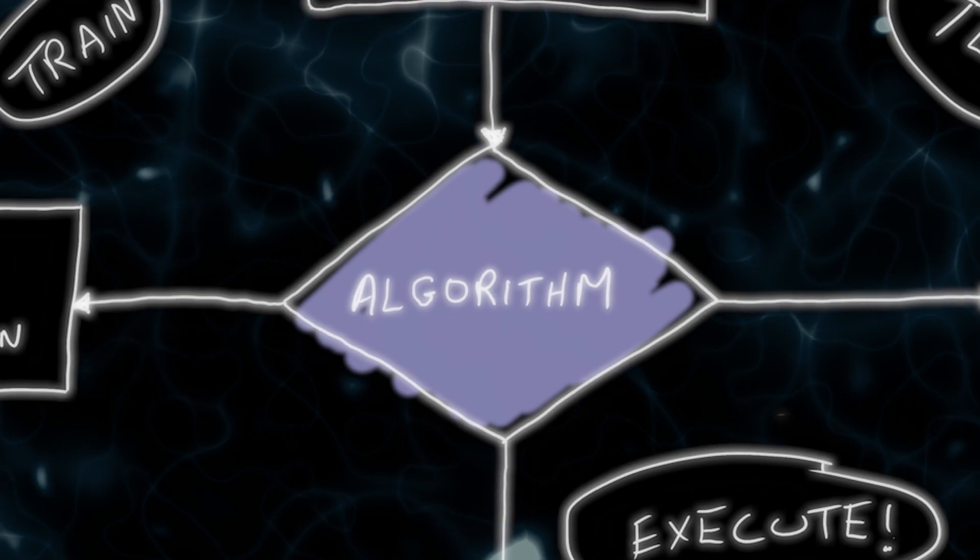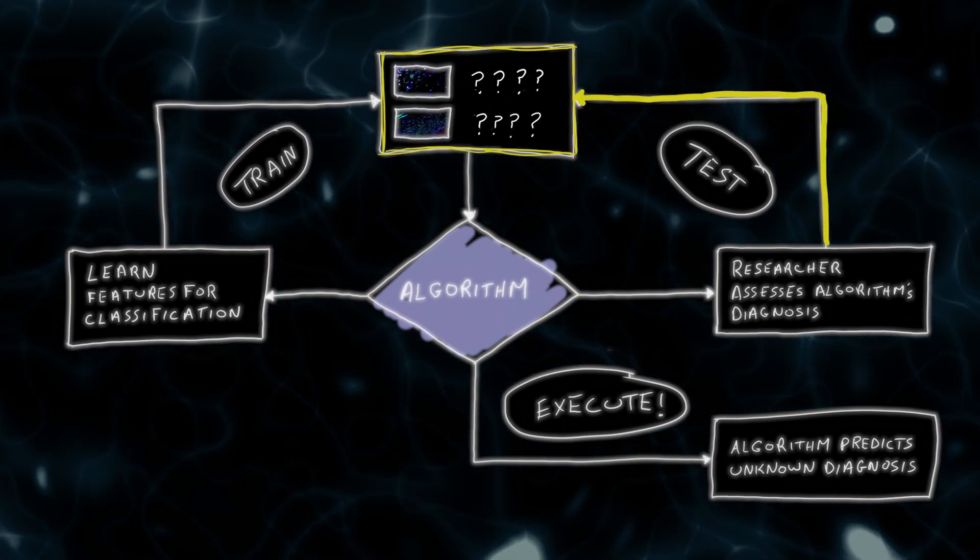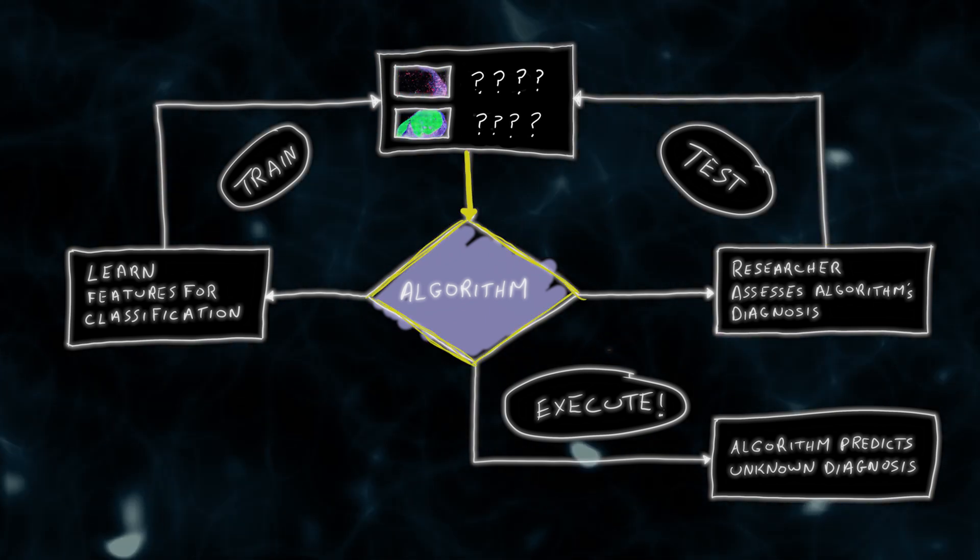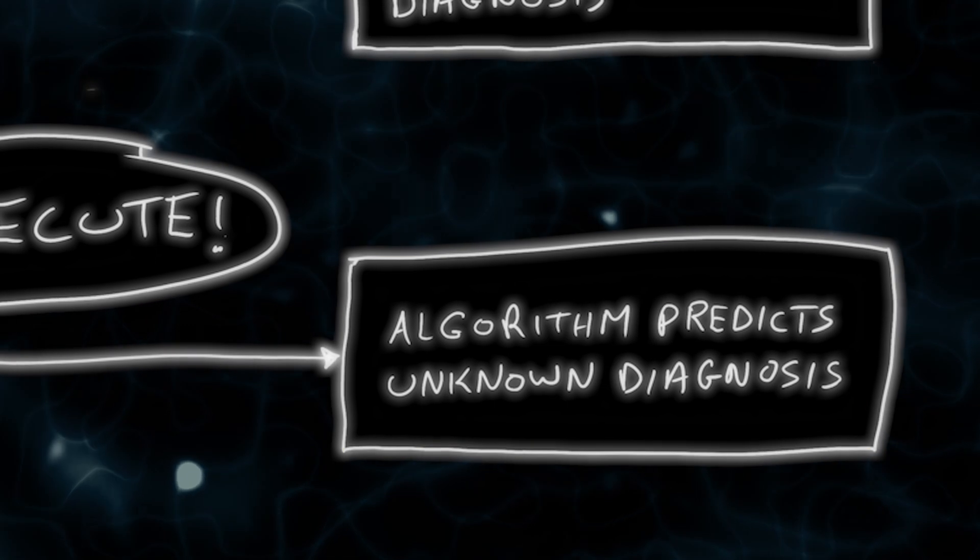The algorithm learns to discern the two. It's designed to learn from its mistakes, so the more images it sees, the better it gets at diagnosing. Ultimately, it gets so good that it can help oncologists find tumors that they might otherwise miss.